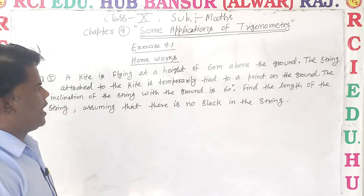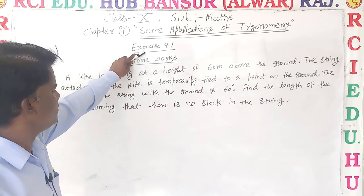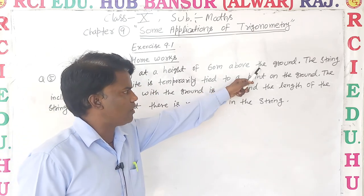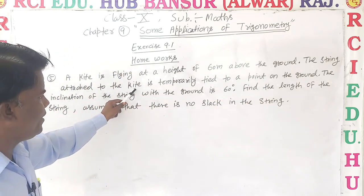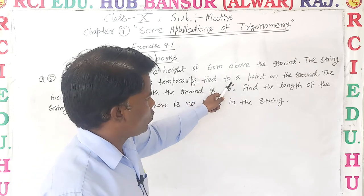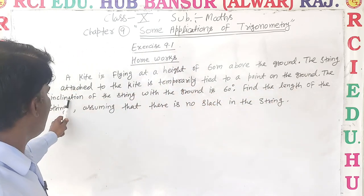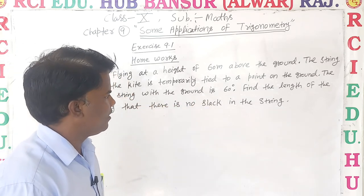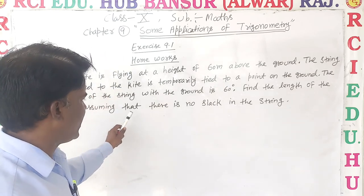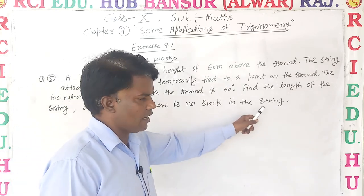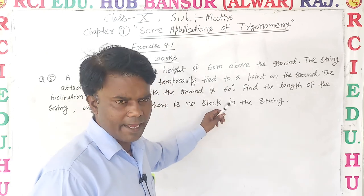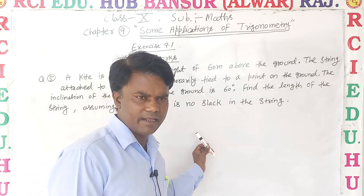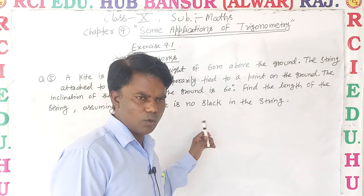After that, the next question for you to do is Exercise 9.1, Question number 5. A kite is flying at a height of 60 meters above the ground. The string attached to the kite is temporarily tied to a point on the ground. The inclination of the string with the ground is 60 degrees. Find the length of the string, assuming there is no slack. First, draw a diagram, put in the values according to the diagram, identify the relevant sides, apply the appropriate trigonometric ratio, and solve.